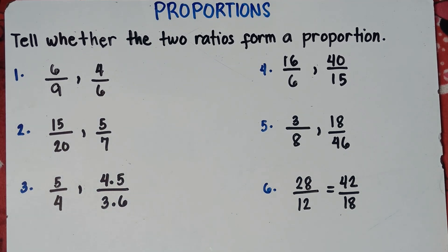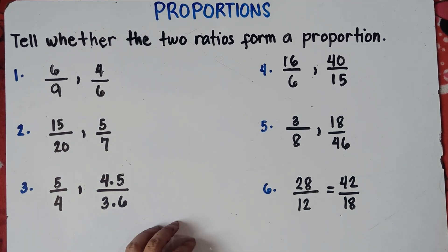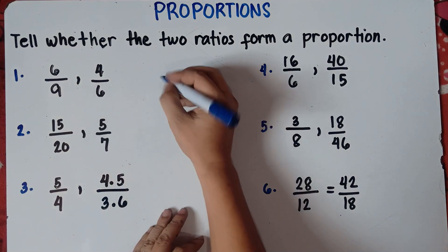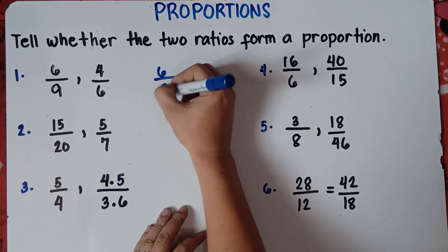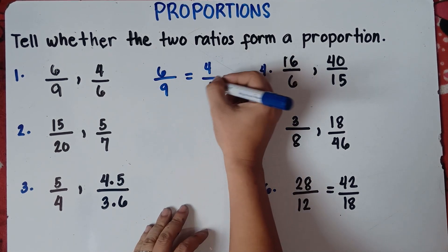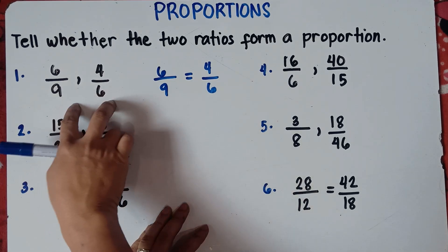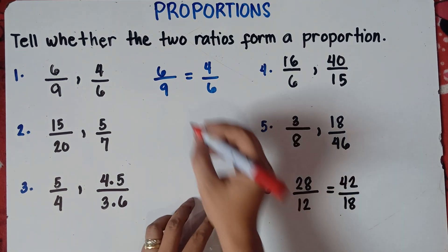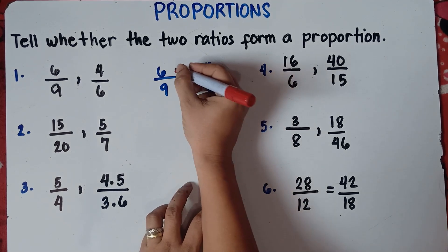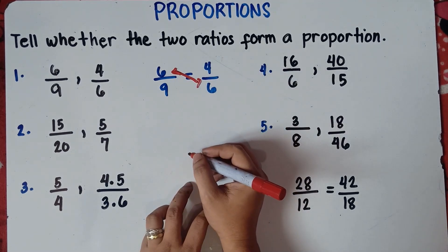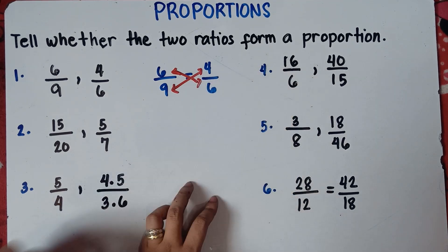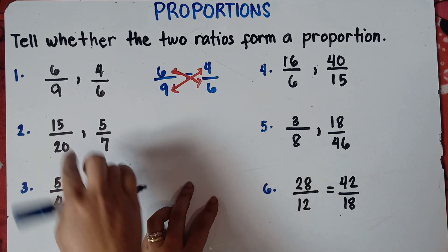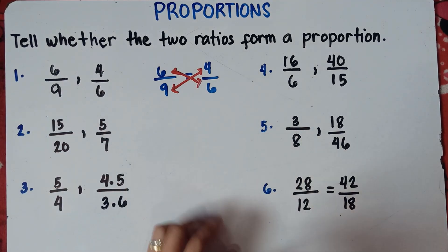Let's start with number one. We have 6 over 9 and the other ratio 4 over 6. We can write this as 6/9 = 4/6. To check if these two ratios form a proportion, just do cross multiplication. You multiply 6 and 6, so 6 times 6, and the other one, 9 times 4. If they have the same answer, therefore these two ratios form a proportion.